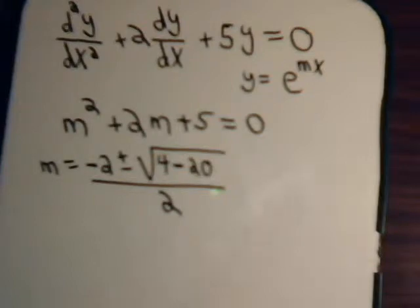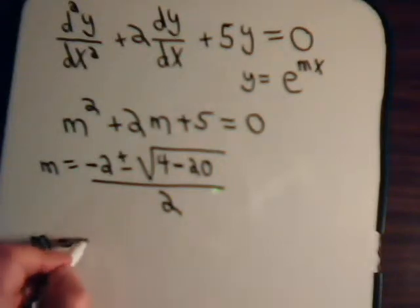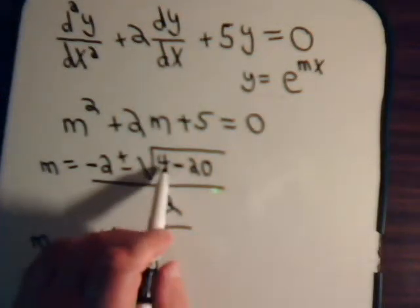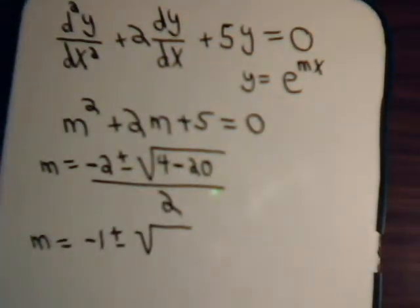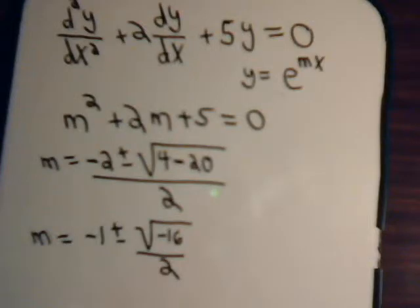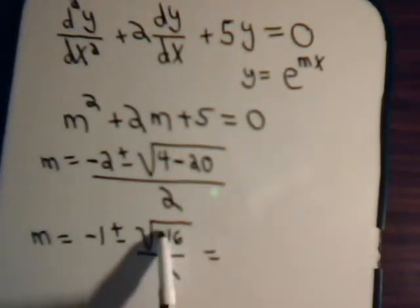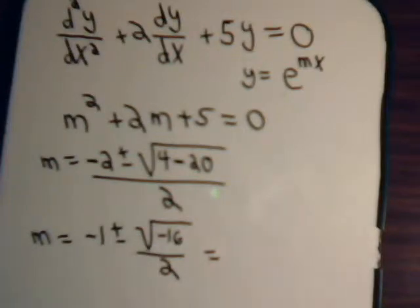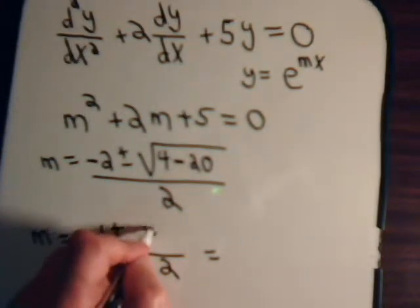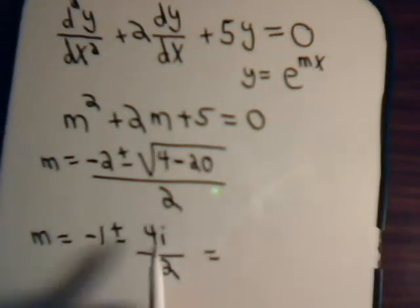So here's m, and m will equal, this is, 2 divided by 2 is 1, minus 1, plus or minus the square root, that would be the square root of minus 16, divided by 2. So this will equal, the square root of minus 16, that's 4i. Divide it by 2, then that's going to be minus 1, plus or minus 2i.